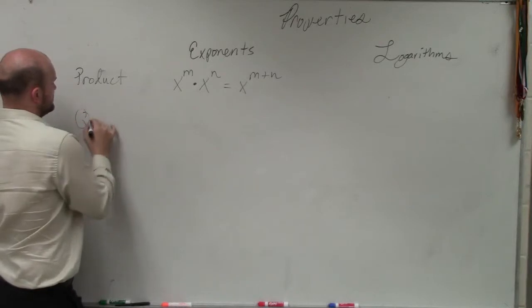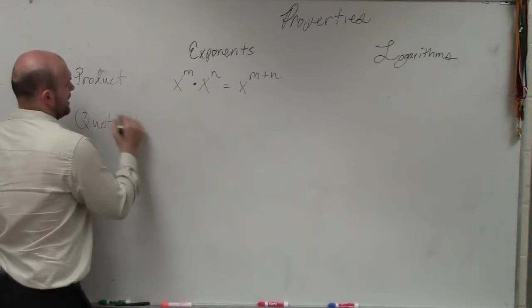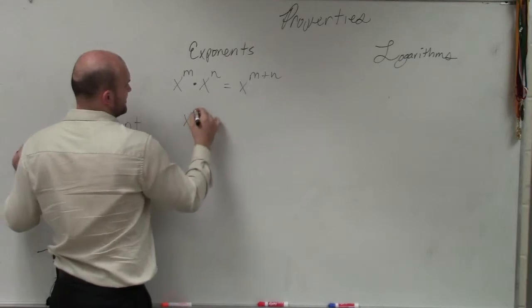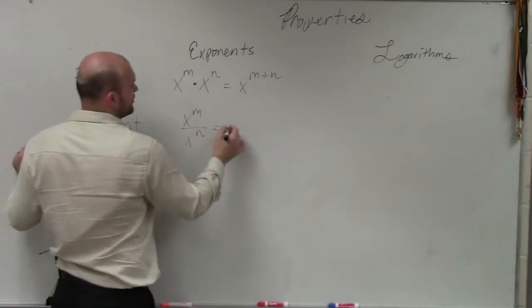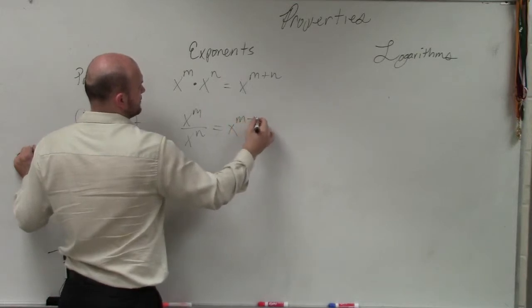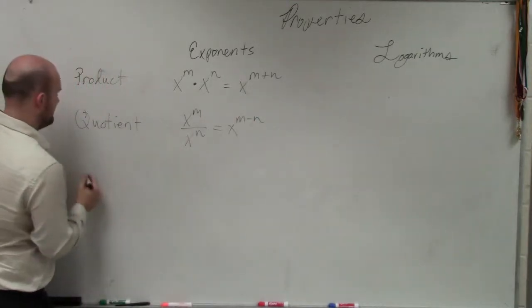The next one was the quotient property. And what the quotient property said was kind of the same thing. If we divide two properties, then we are simply going to subtract the powers. And again, this is only when the base is the same.